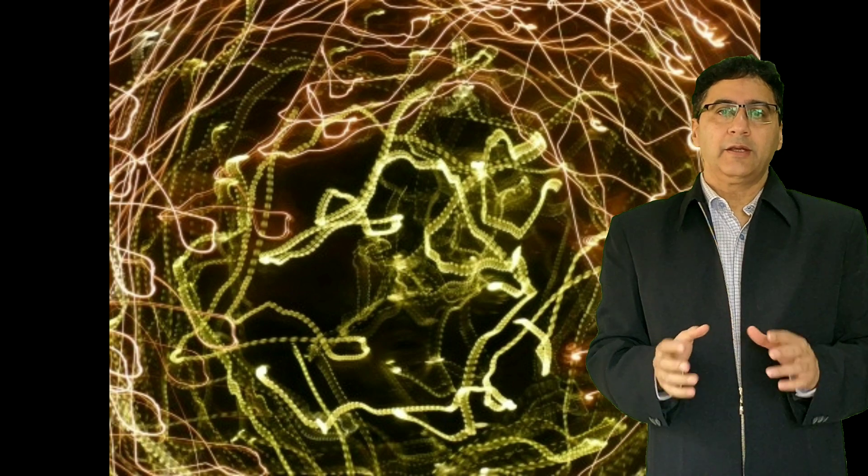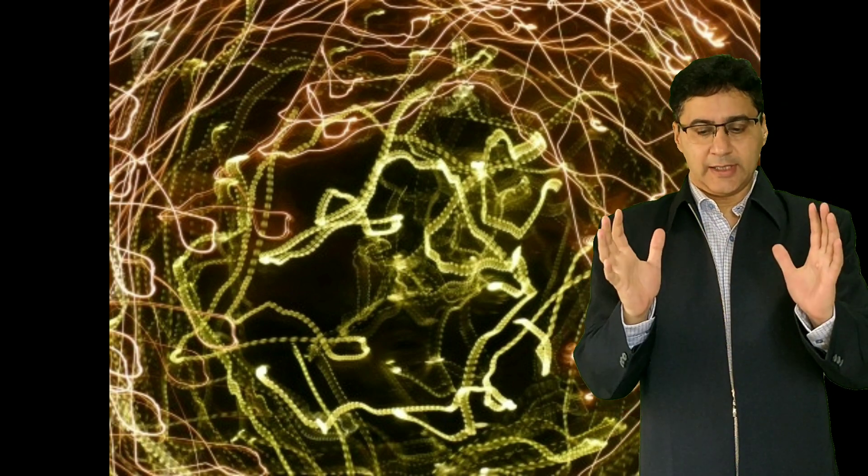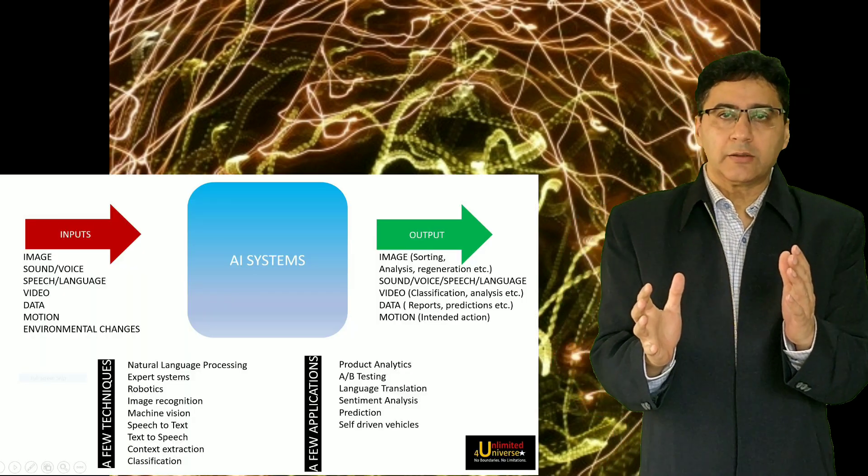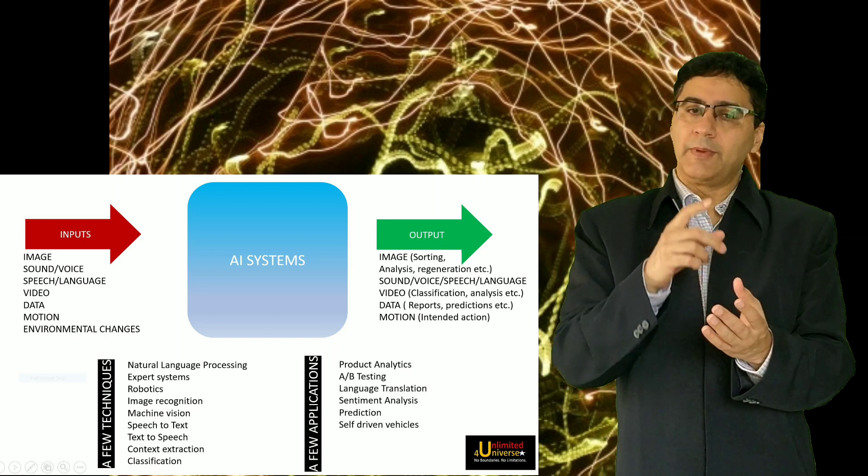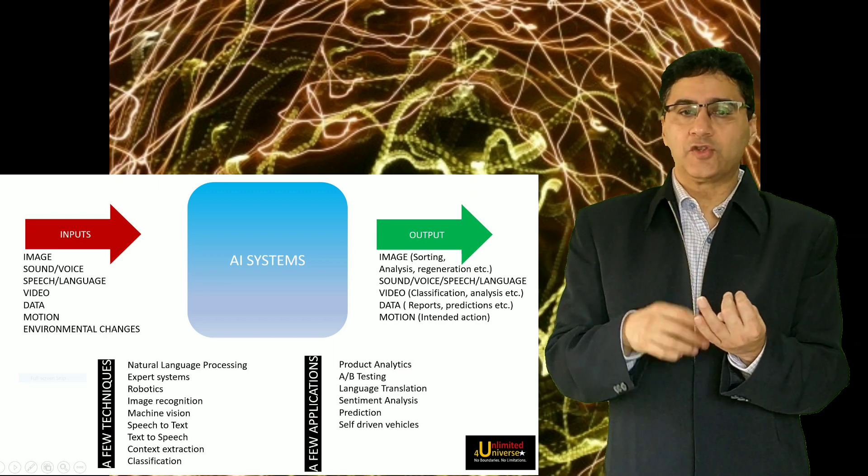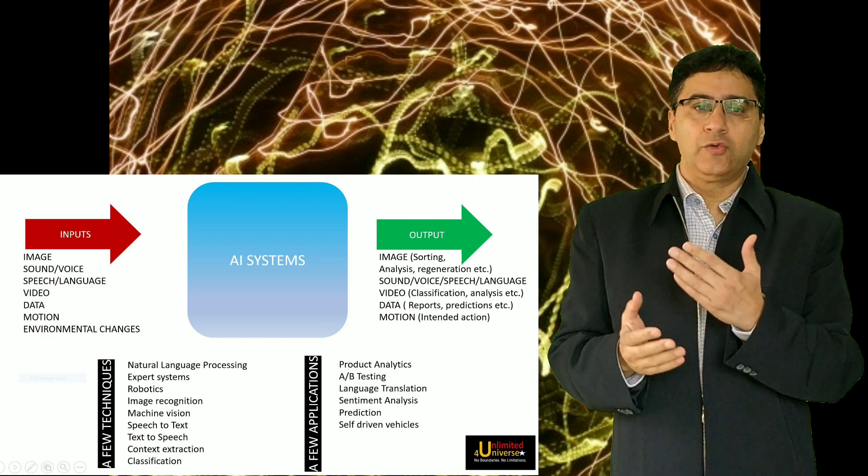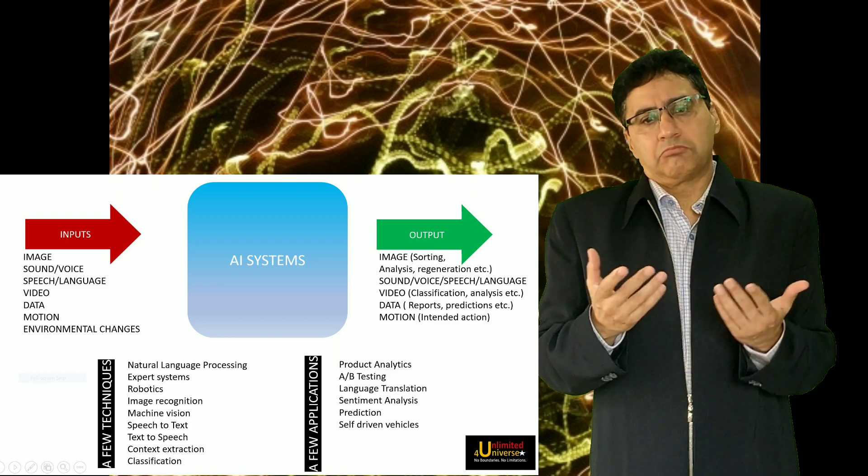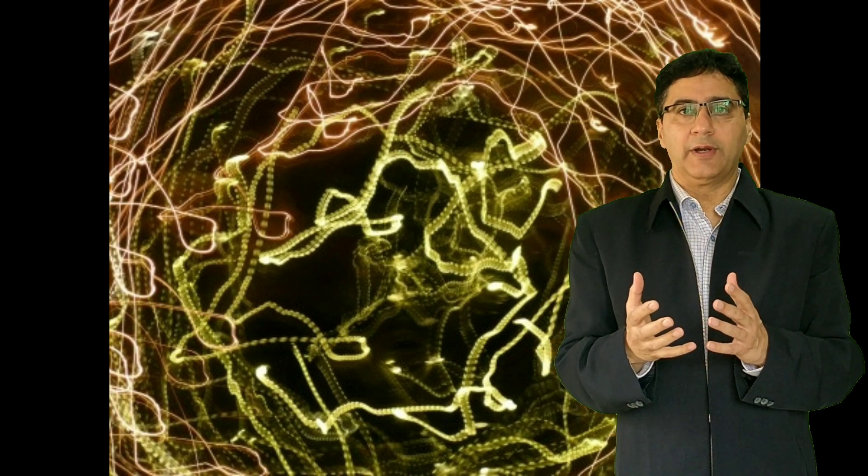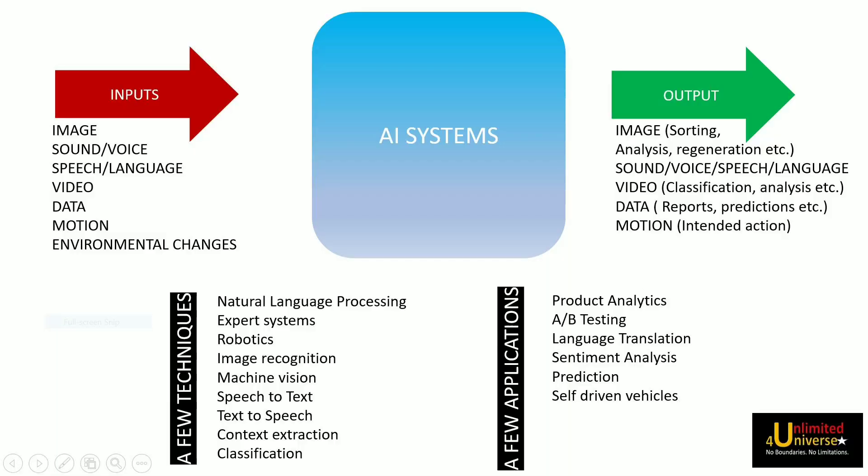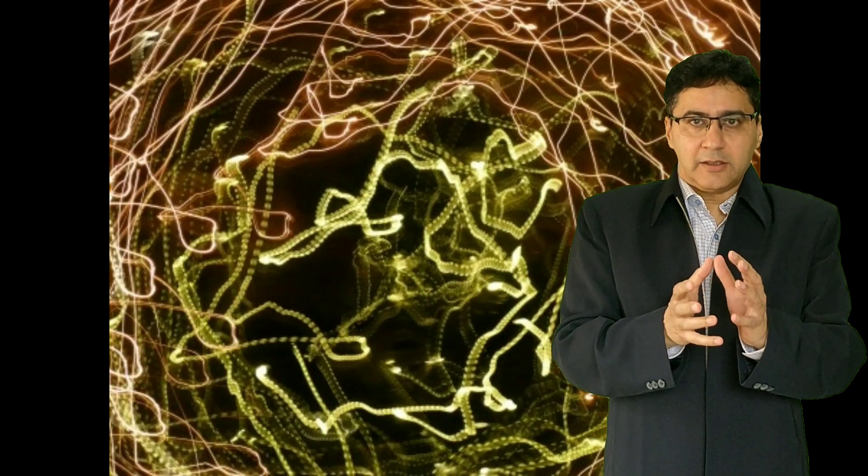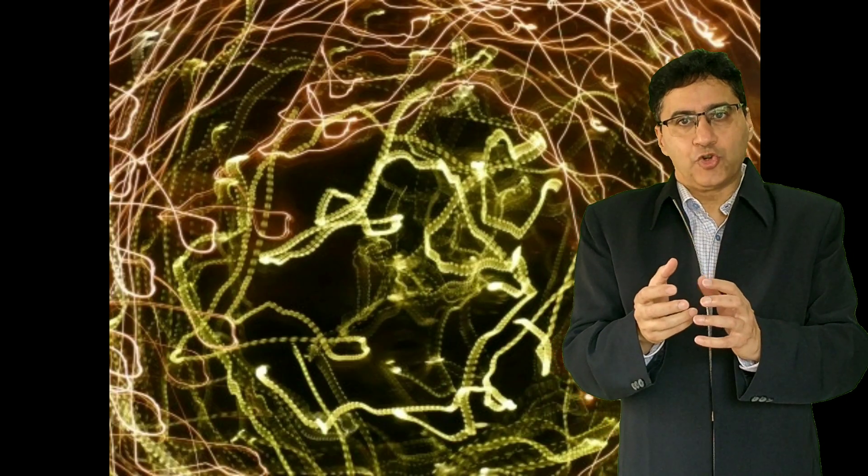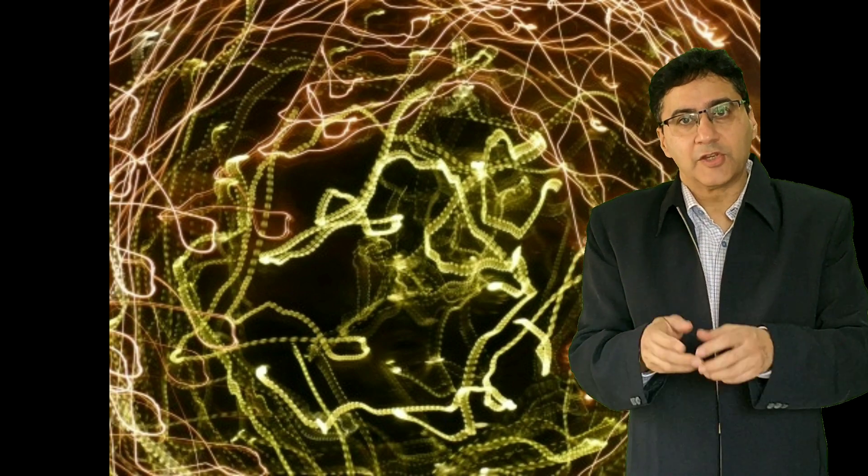So typically you will find if you consider artificial intelligence as a black box then there will be inputs which are in the form of maybe images, sound or voice or speech or language or maybe video data, motion or maybe environmental changes. This may be the inputs that it will receive, it will use variety of techniques like maybe NLP, expert system, image recognition and so on and so forth, it will use a lot of existing practices and convert that input into some action such that it gives an output.